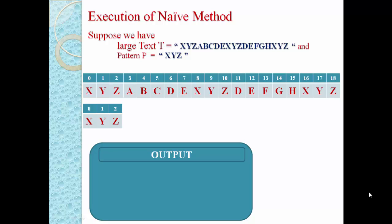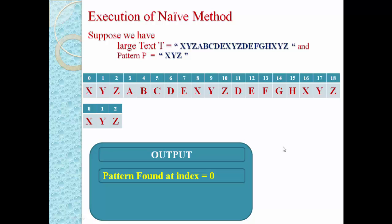As per the naive string matching algorithm, we compare all characters of the pattern with the large text T. We compare the first three characters: X matches X, Y matches Y, and Z matches Z. All characters match, so the pattern is found inside the large text T. We write the first occurrence as output: pattern found at index 0. Since there may be multiple occurrences, we must shift our pattern by 1 to check further.